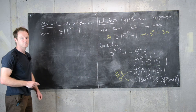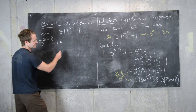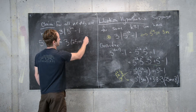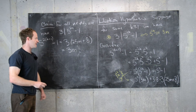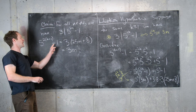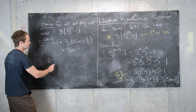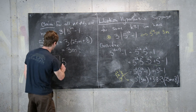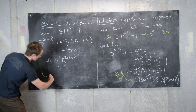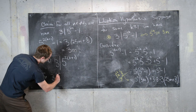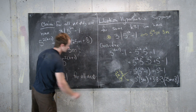So we have five to the two times k plus one minus one equals three times twenty-five m plus eight, which equals three times m prime where m prime is that integer combination. Therefore five to the two k plus one minus one equals three times some integer, from which it follows that three divides five to the two k plus one. This finishes our proof that three divides five to the two n minus one for all natural numbers n.